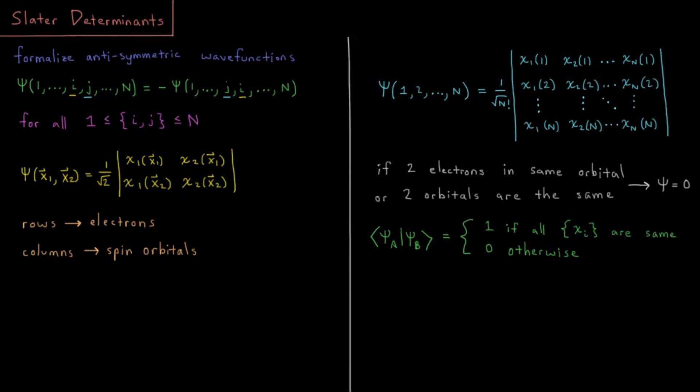This video will discuss Slater determinants as a systematic way of writing anti-symmetric wave functions. I noted in the video on Hartree products that a Hartree product has a problem that it doesn't satisfy the anti-symmetry principle.